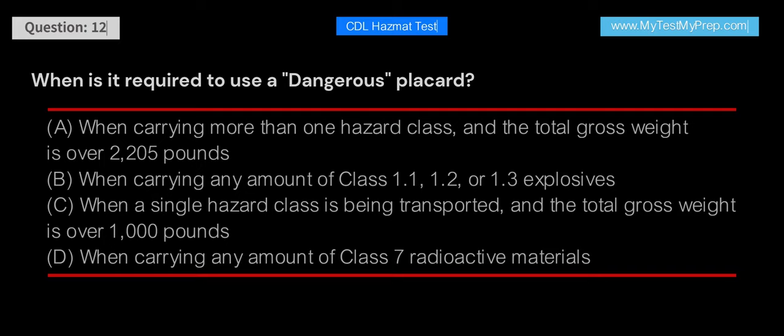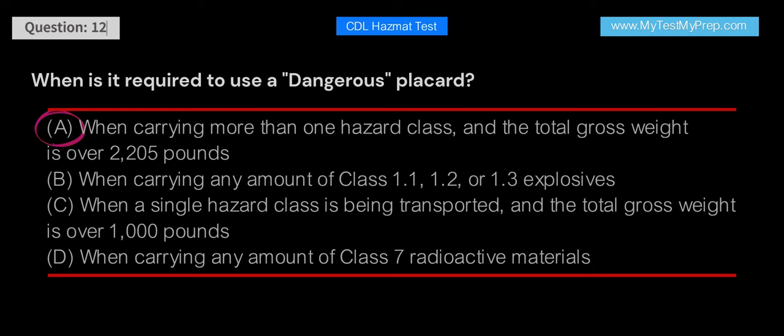When is it required to use a dangerous placard? A. When carrying more than one hazard class and the total gross weight is over 2,205 pounds. B. When carrying any amount of Class 1.1, 1.2, or 1.3 explosives. C. When a single hazard class is being transported and the total gross weight is over 1,000 pounds. D. When carrying any amount of Class 7 radioactive materials. Answer: A. A dangerous placard is required when carrying more than one hazard class and the total gross weight is over 2,205 pounds. This placard is used to indicate that multiple hazards are present.